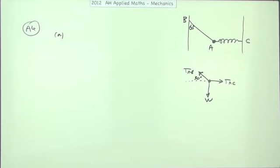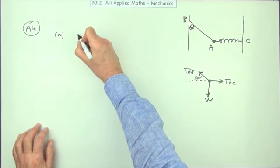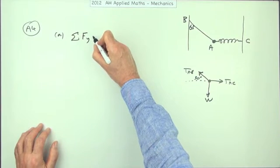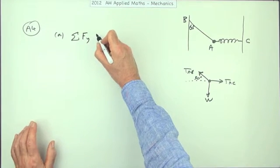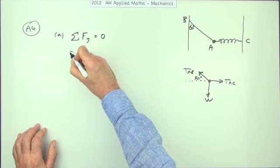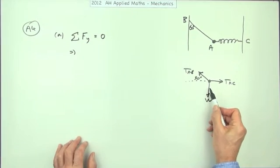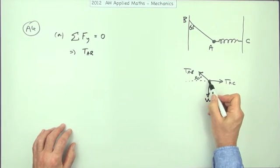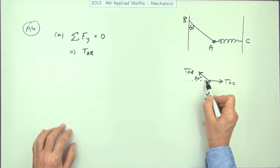Right, let's start equating them. Again, horizontally and vertically. Let's take the sum of the vertical forces. The sum of the vertical forces should come to zero. So that means what have we got vertically? Well, TAB, the component of that up the way is opposite the 30, that's sine 30.